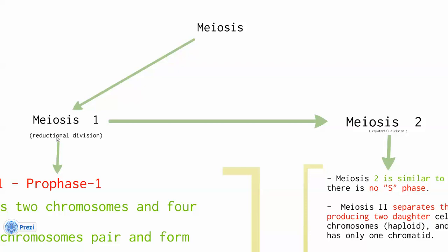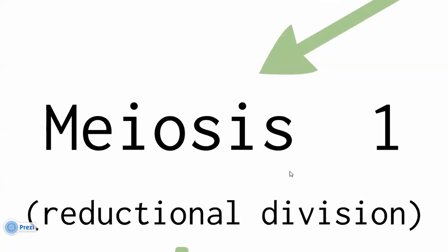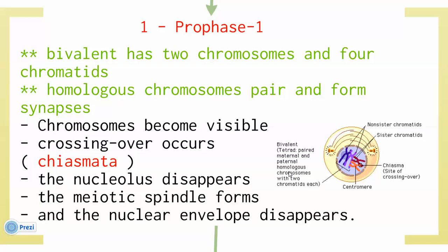Meiosis consists of two stages: meiosis 1 and meiosis 2. Meiosis 1 is also called reductional division, because we are going to reduce the number of chromosomes in the cell. The first phase in meiosis 1 is prophase 1. In this phase, we have something called a bivalent — which has two chromosomes and four chromatids. Homologous chromosomes pair and form synapses.